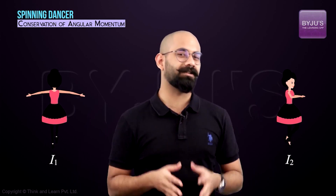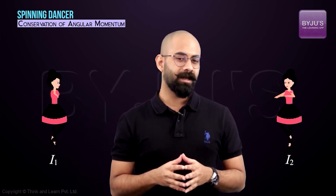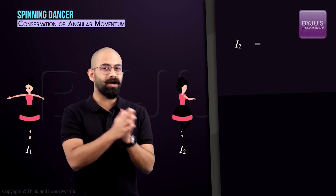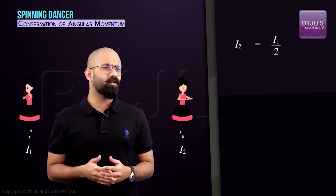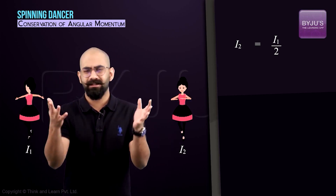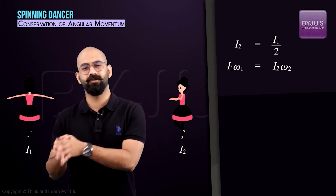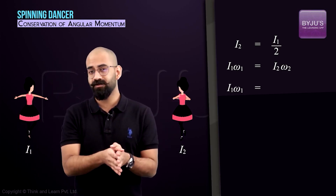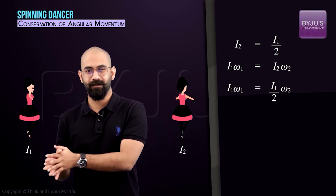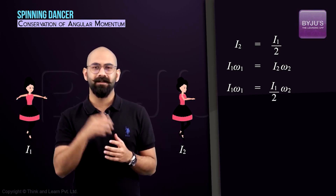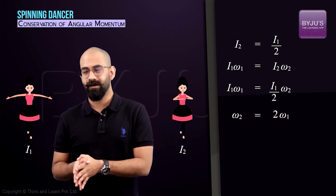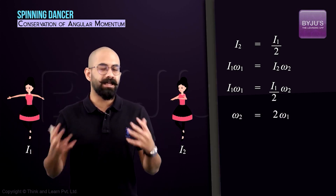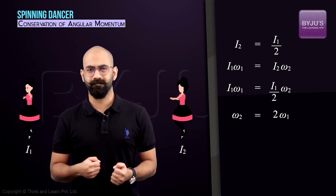Let's test your understanding. Take the spinning dancer: if her moment of inertia reduces by half, so I2 equals I1/2, how does the angular velocity change? From conservation of angular momentum, I1·omega1 equals I2·omega2, which gives I1·omega1 equals (I1/2)·omega2. Rearranging, omega2 equals 2·omega1 — the angular velocity doubles when the moment of inertia reduces by half.